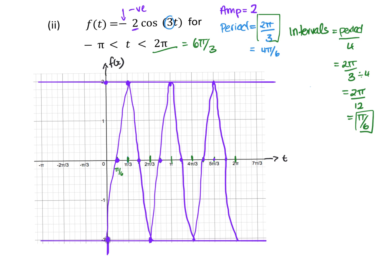That's the cosine graph. Because they're not saying equal to, let's keep those endpoint dots open. If it's a negative sine graph, remember it's the opposite — you go down first, then up, like that.